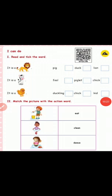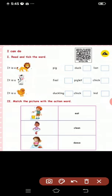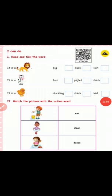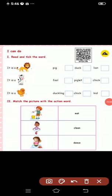Second exercise — match the picture with the action word. See the first one — what is the boy doing? Cleaning. So you have to match the second box — clean. Second picture — what is the child doing? Dancing. So you have to match — dance. Next, see the third one — what is the child doing? Eating. So you have to match — eat.